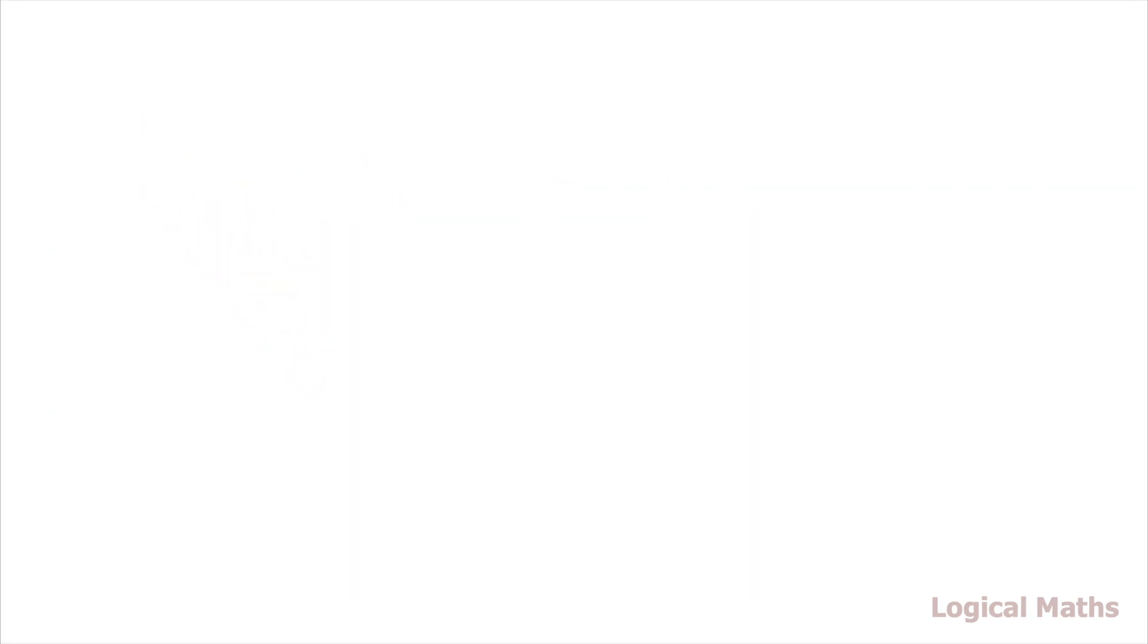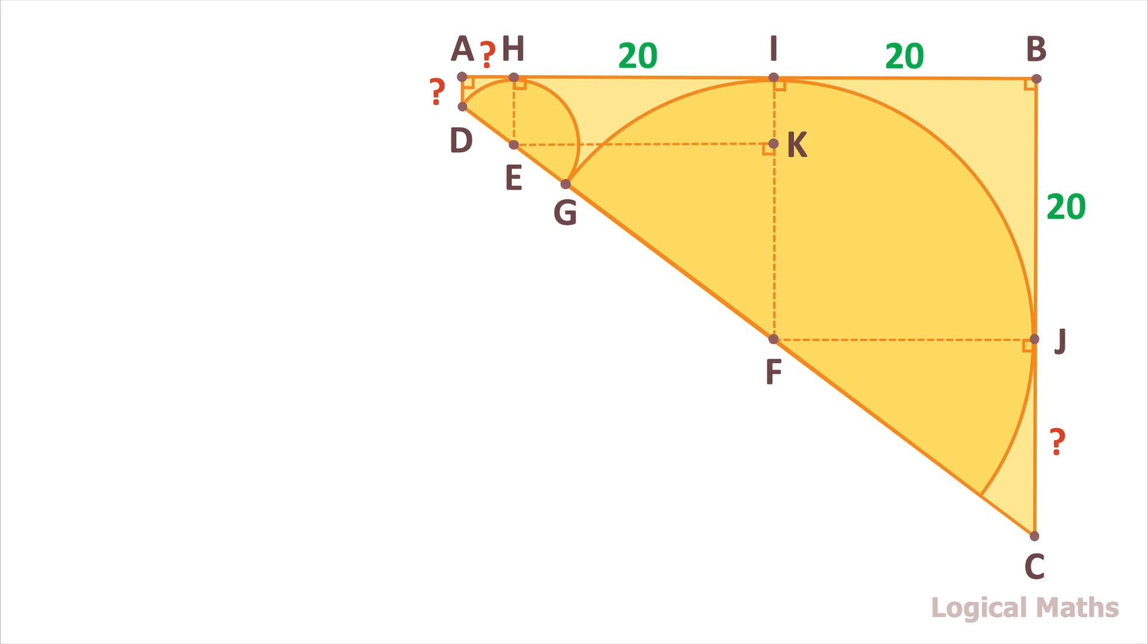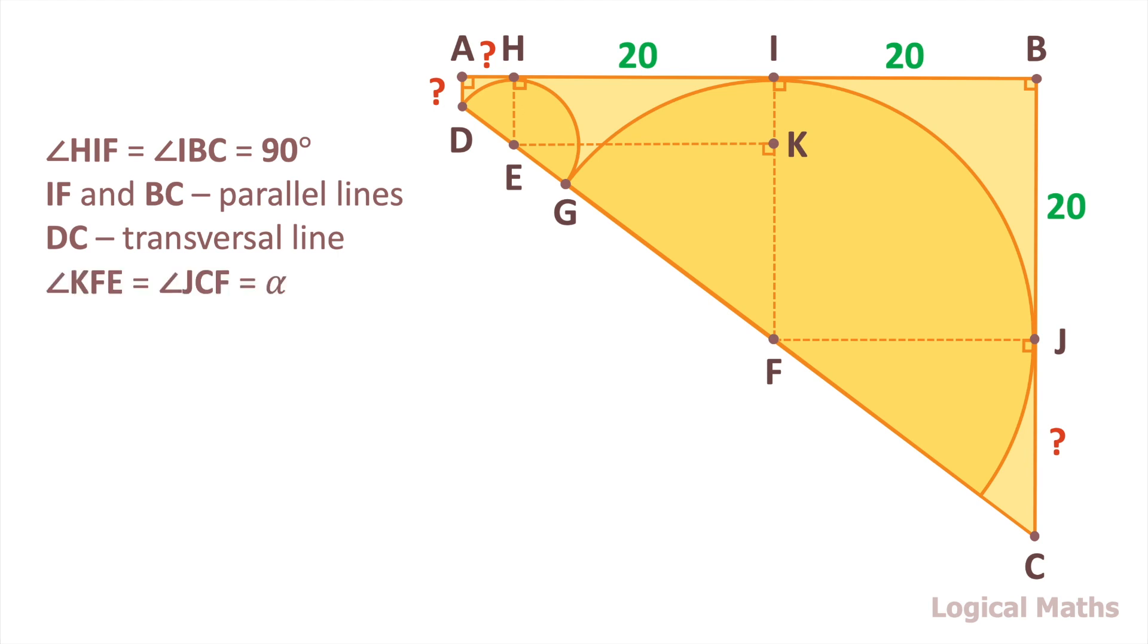Now we can continue with solving the problem. Angles HIF and IBC are equal. AB is a transversal line for IF and BC. So lines IF and BC are parallel. On the other hand, BC is a transversal line for IF and BC. So angles KFE and JCF are equal. Mark them as alpha.